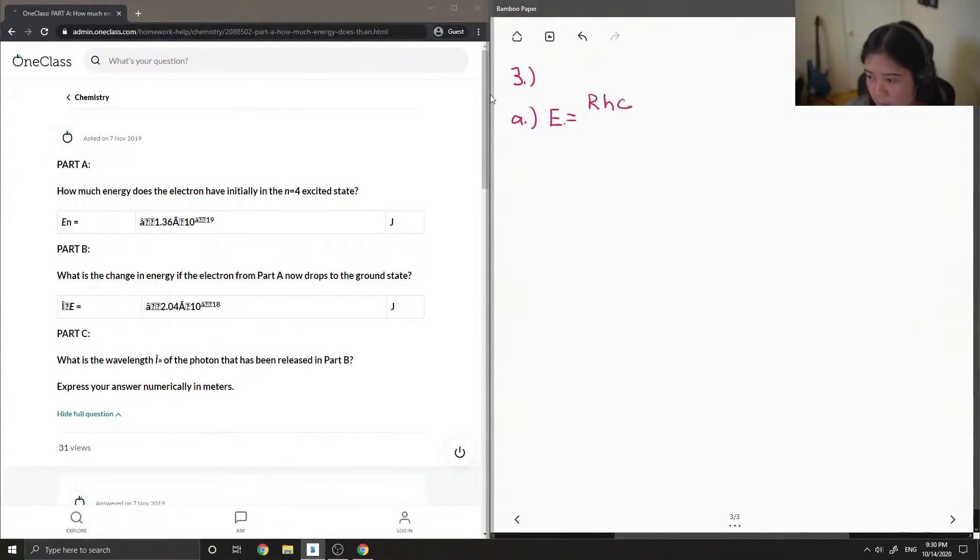equals RHC over N squared. So R is Rydberg's constant. H is Planck's. C is the speed of light. So these are all just constants. And then n is equal to 4 for this question. So this is the excited state.